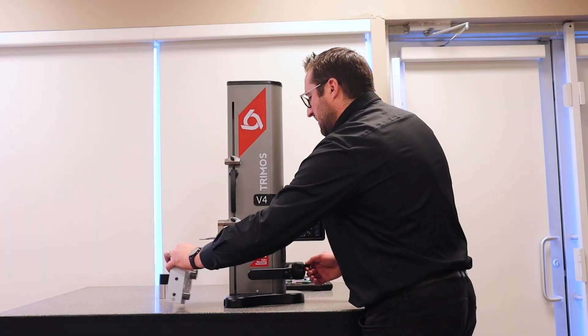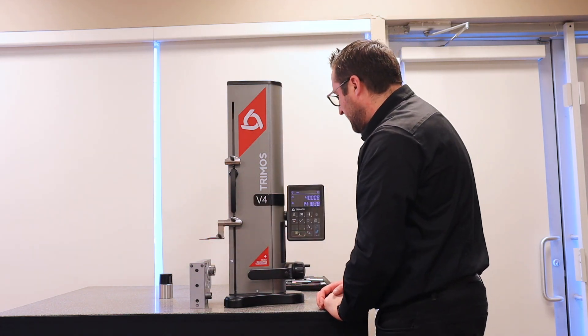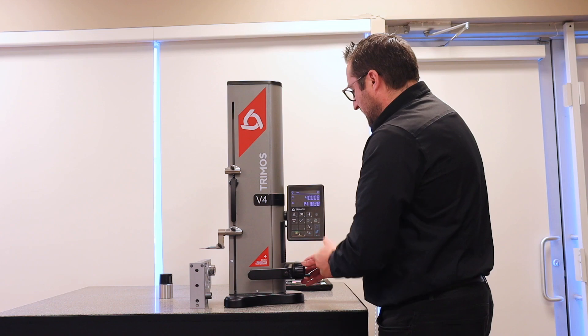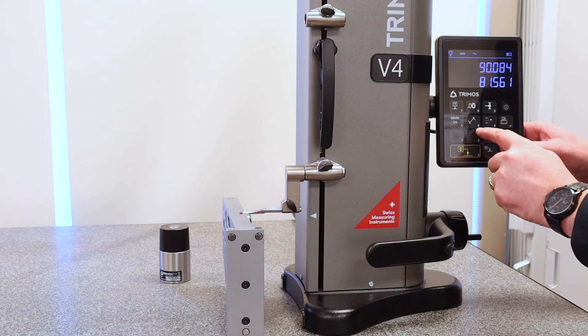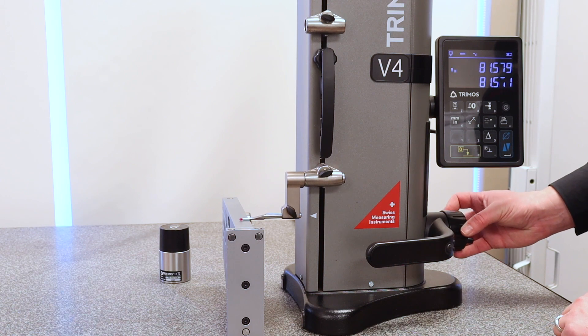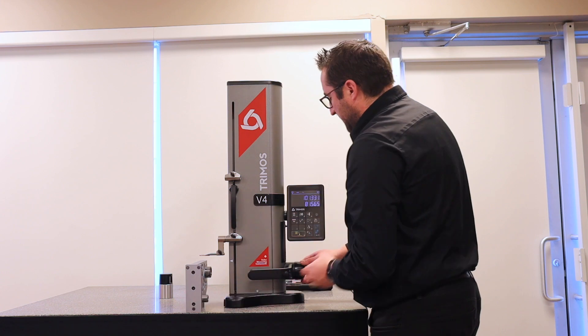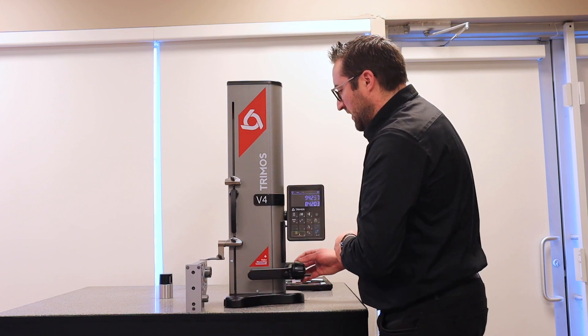Once we've measured the diameter, if we're interested in, say, the flatness on a surface, what we can do is use this function over here. So if I probe the surface, it'll give me the lowest point in relationship to my reference. If I'm interested in the highest point, I can press that function key again.